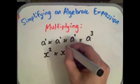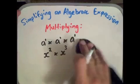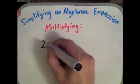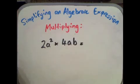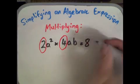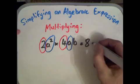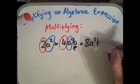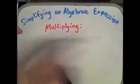x squared times x cubed gives us x to the power of 5. We add those indices when we have the same base value being multiplied together. For example: 2a squared times 4ab. Start with 2 times 4 — that's 8. Then a squared times a, which is a to the 1, gives a to the power of 3 (2 plus 1). Then tag the b on the end: 8a cubed b.